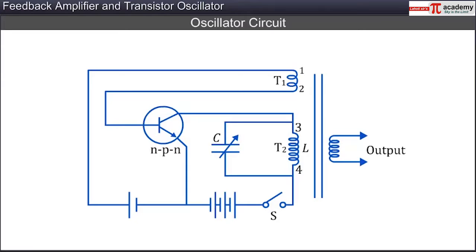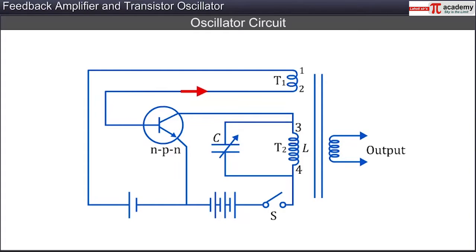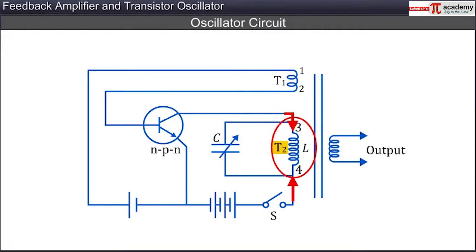A simple circuit used to understand a transistor oscillator is shown here. The circuit contains an NPN transistor in the common emitter configuration with the base emitter junction forward biased and the base collector junction reverse biased. The input circuit of the transistor is connected to a coil T1 across terminals 1 and 2. The output circuit of the transistor is connected to a coil T2 across terminals 3 and 4. Note that coil T2 forms a part of the LC circuit used for the feedback network.